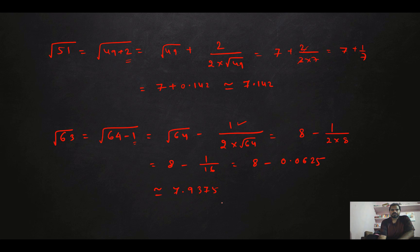And like this, we can calculate the non-perfect square root. I hope you like this technique. This is the Anurupyena technique — you can call it, as it is from Vedic mathematics. I hope you like this video and I will be coming with some interesting videos like this. Please stay tuned to my channel, that is Learn Kuipo. I am signing out. Have a blessed day. Thank you.